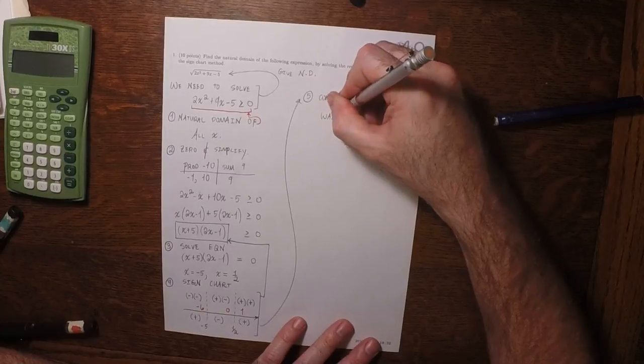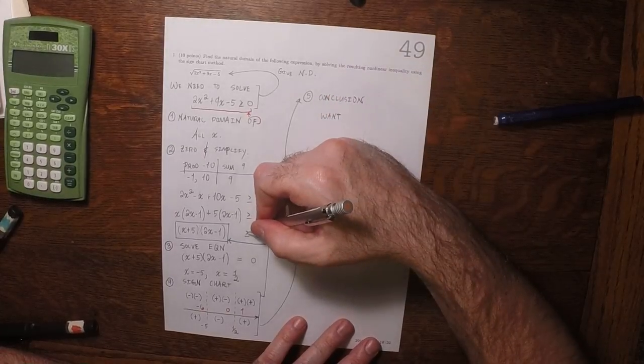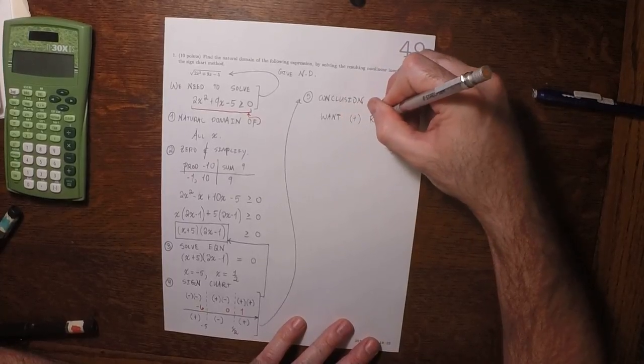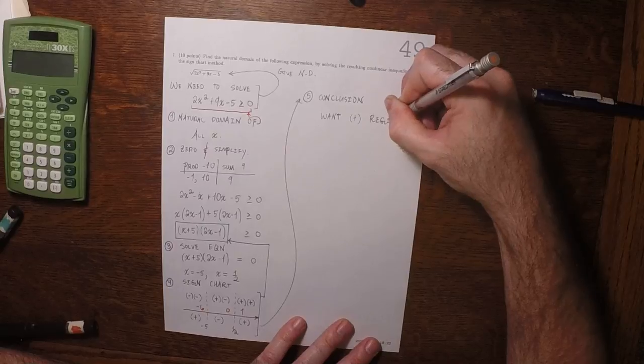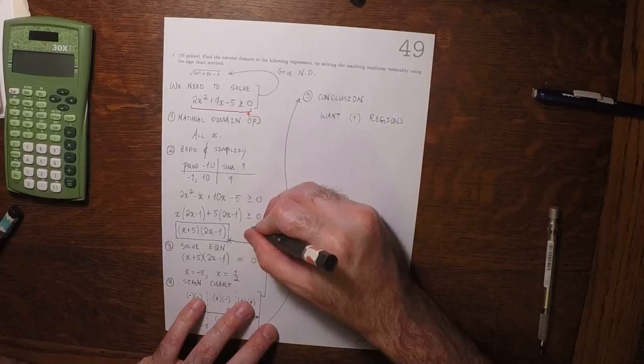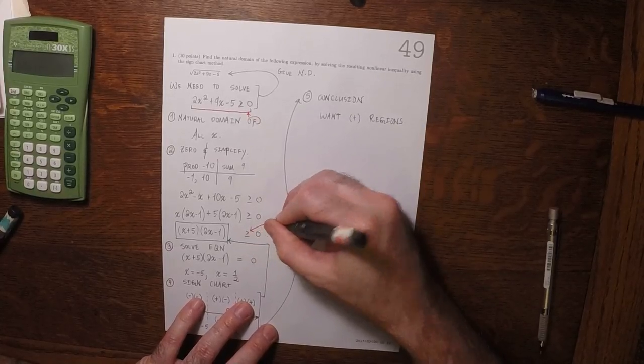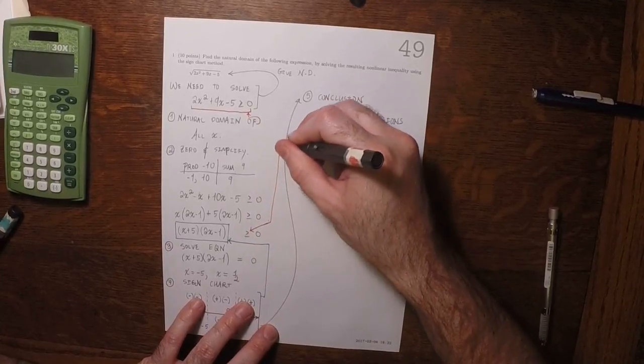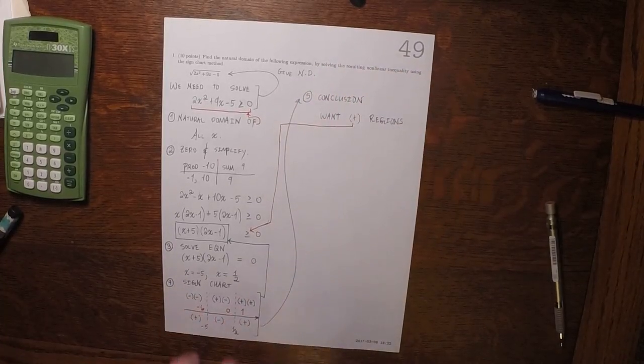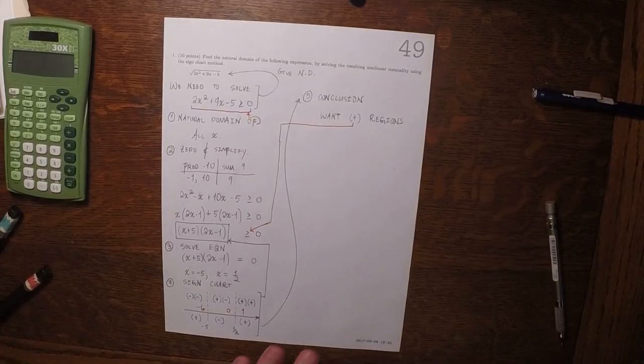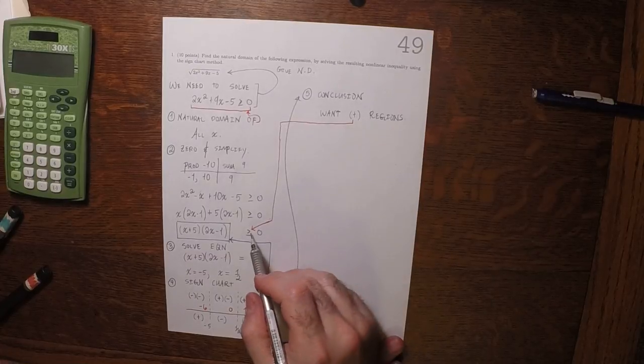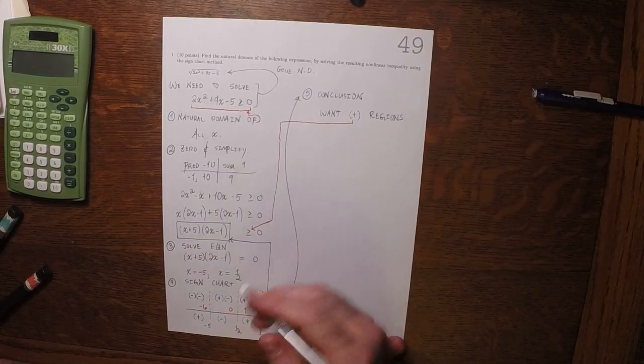So we're going to want all of the positive regions. The reason we want the positive regions is this. It says greater or equal to 0. So there's two of those. And because it says greater or equal, we're going to want the endpoints.